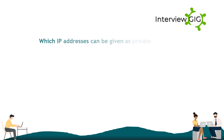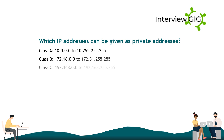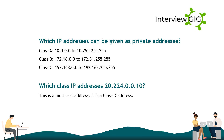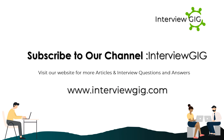Which IP addresses can be given as private addresses? Class A: 10.0.0.0 to 10.255.255.255. Class B: 172.16.0.0 to 172.31.255.255. Class C: 192.168.0.0 to 192.168.255.255. Which class IP address is 20.224.0.10? This is a multicast address — it is a Class D address.